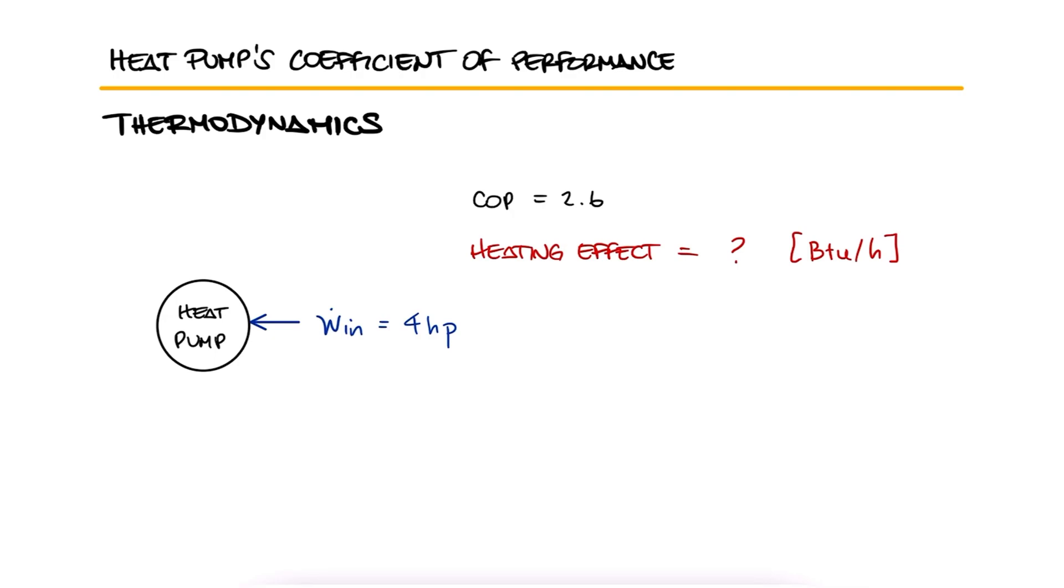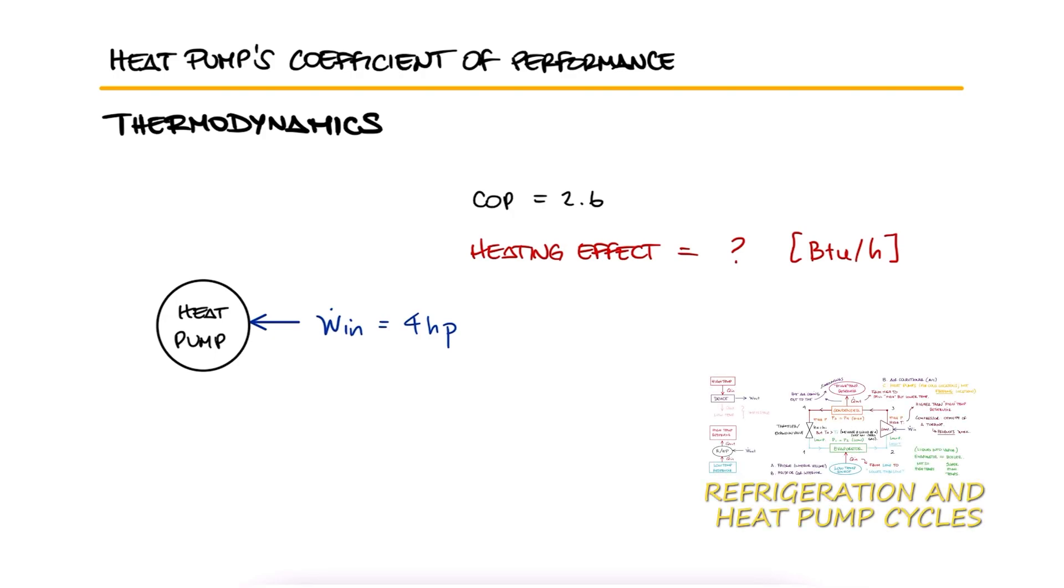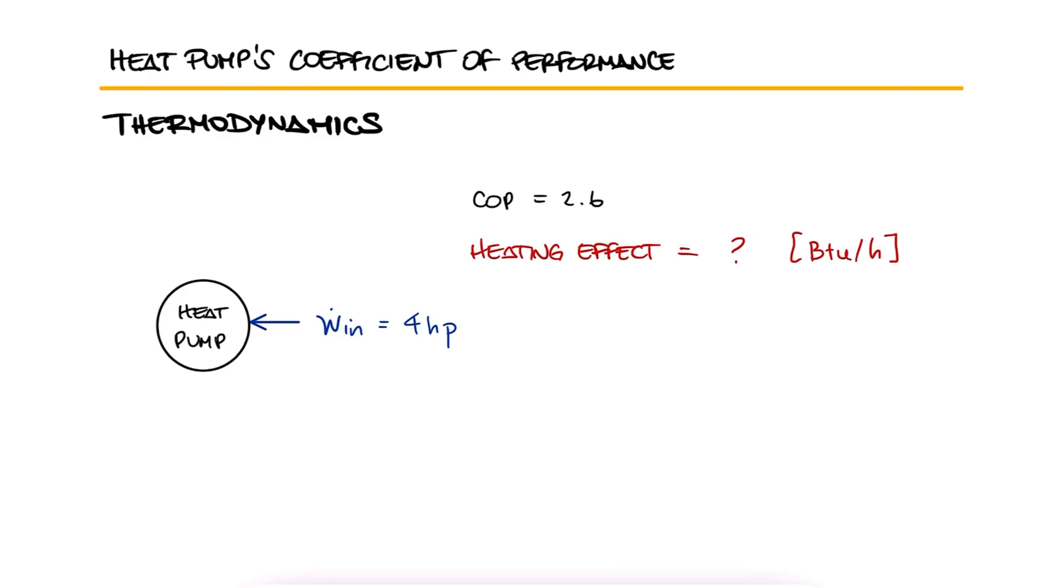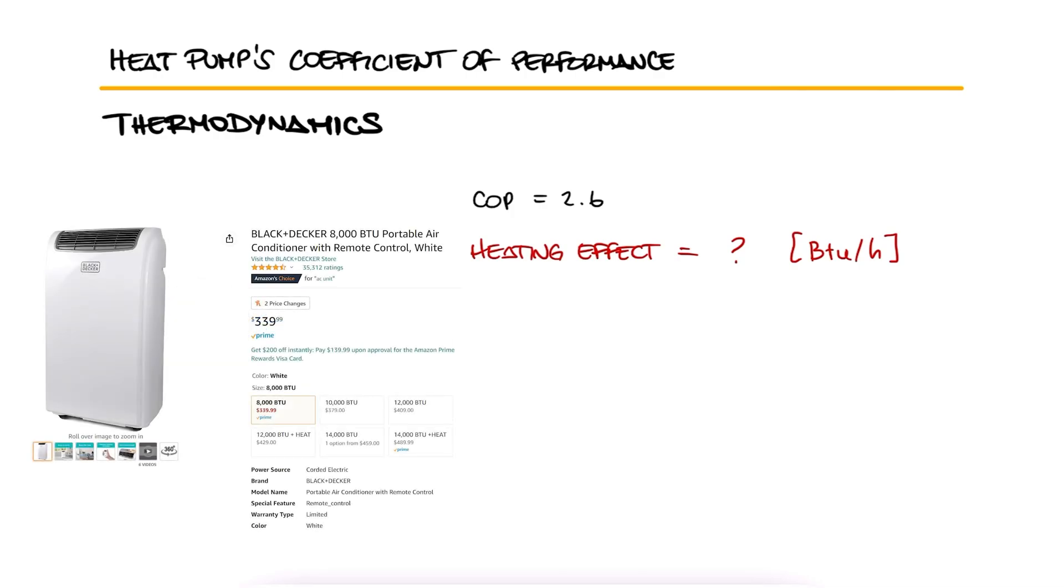This is the second example for the refrigeration and heat pump cycles main lecture. The link to that 10 minute lecture and all the other examples and lectures of the thermo course are found in the description below. The main difference in this example is that we're using English units. If you've ever looked up AC units or heat pumps online within an American website, you're most likely going to see capacities in BTU.